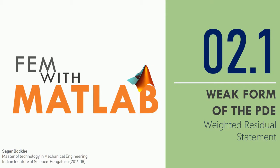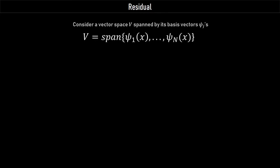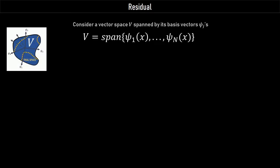Now we know what PDEs are and what boundary conditions are, so we are starting a journey towards finding an approximate solution to this PDE. We are looking for the solution in a vector space V, which we call the trial space, whose basis vectors are ψⱼ's. We can write this trial space as the span of these basis vectors, where each basis vector is a function.